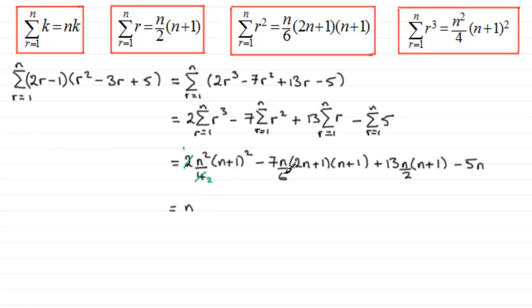And because we've got fractions involved—2 here, 6 and a 2—I'm looking for a number that they all go into, the lowest common multiple, which is going to be 6. So I'd have n over 6 there. Let's just put a square bracket here.